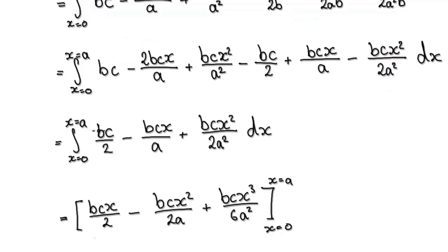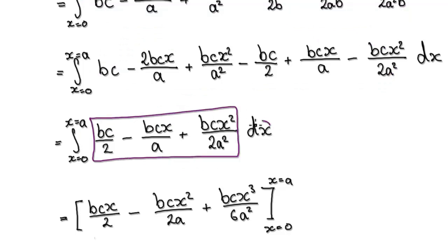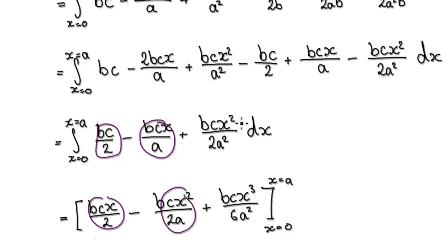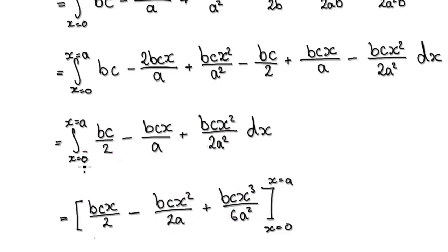Looking at this, we just need to integrate with respect to x. Integrating this gives us this; integrating the next term gives us this; and integrating the next gives us this, evaluated from 0 to a.